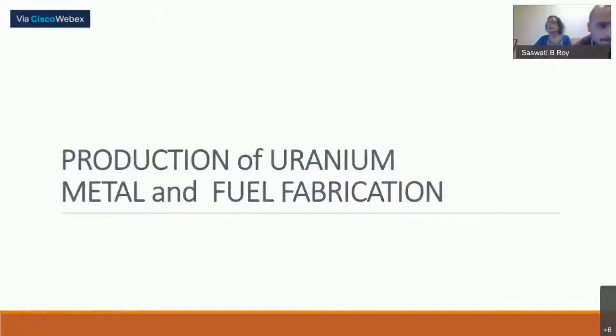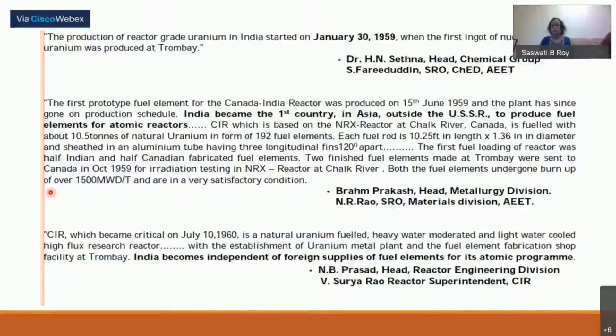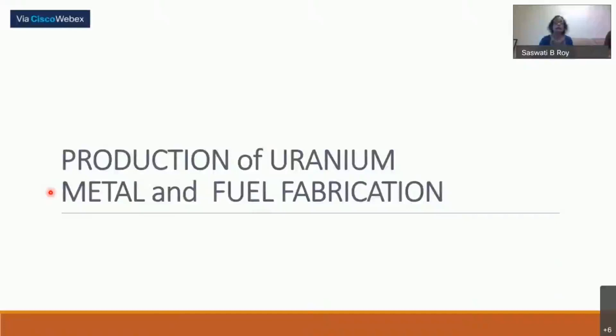And the mine in Tummalapalli and three mills at Jaduguda, Turamdih, and Tummalapalli. So we have seen these mines and mills extracting uranium from the ore and then making the yellow cake. This yellow cake is being utilized for production of nuclear grid.